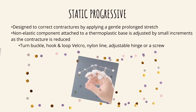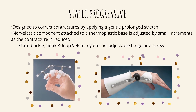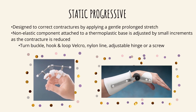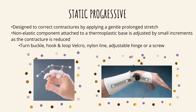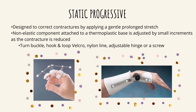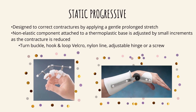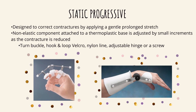The next category is the static progressive orthosis. This is almost the same as serial static; however, the non-elastic component attached to the thermoplastic base is the one being adjusted by small increments as the contracture is reduced. Components such as turn buckle, hook and loop velcro, nylon line, adjustable hinge, or a screw are used. The hinges and screws can be adjusted in small increments as the contracture reduces.